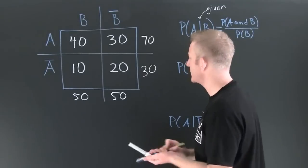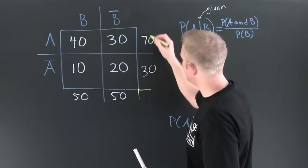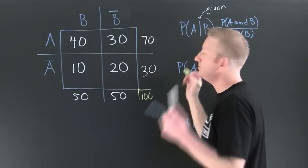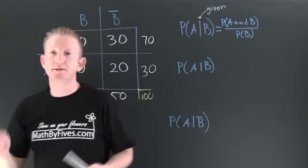Let's check these margins real quick. Down here, 70 and 30. It's 100. 50 and 50. We've done this correct.